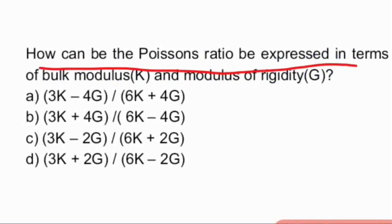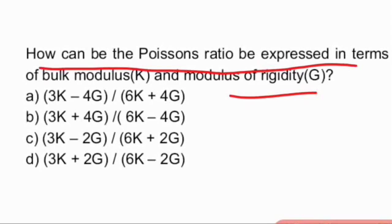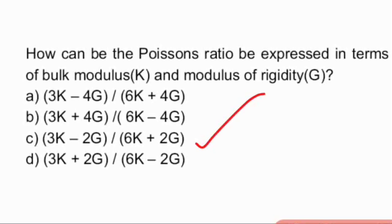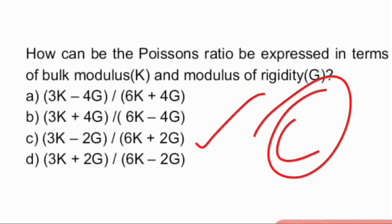Next: how can the Poisson's ratio be expressed in terms of bulk modulus and modulus of rigidity? It can be expressed as (3K minus 2G) by (6K plus 2G). So option C is the right answer: (3K − 2G) / (6K + 2G).